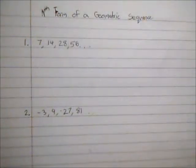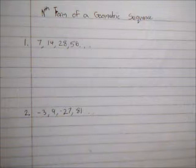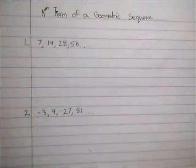In this video, we're going to look at how to find the nth term of a geometric sequence. So a geometric sequence is one where each new term in the sequence is generated by multiplying the previous term by a constant.